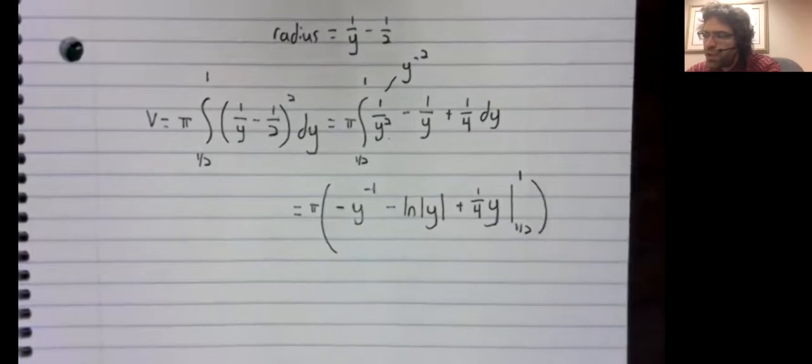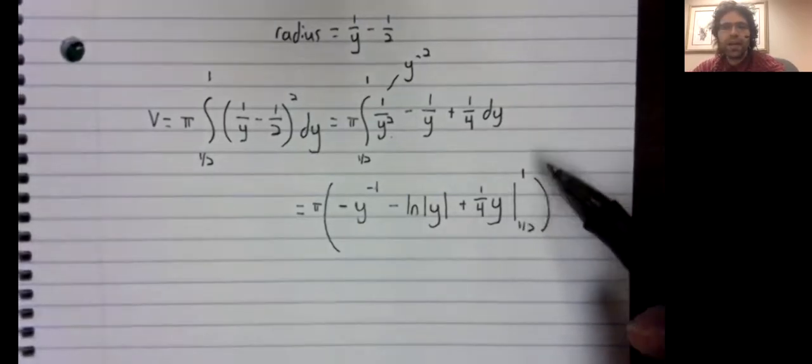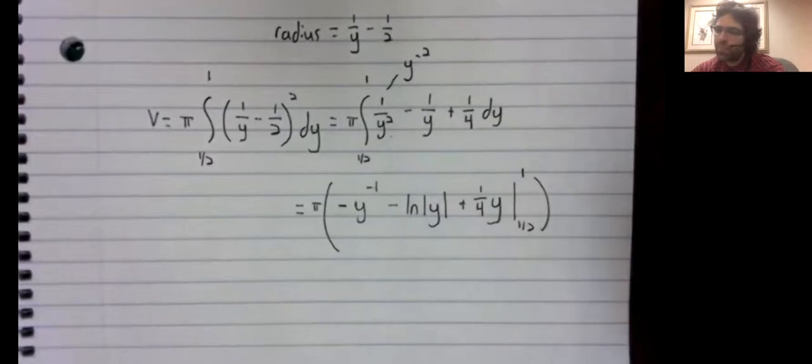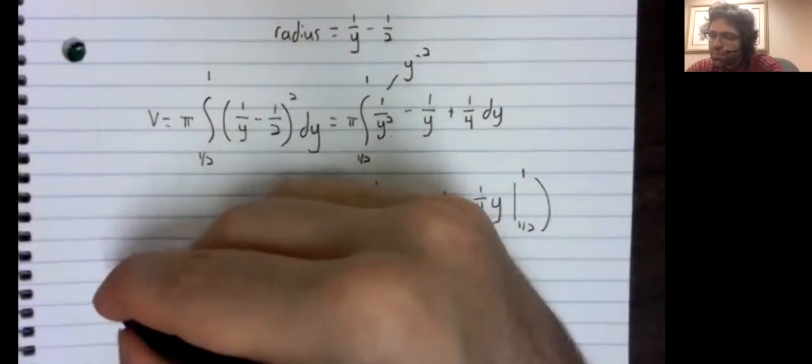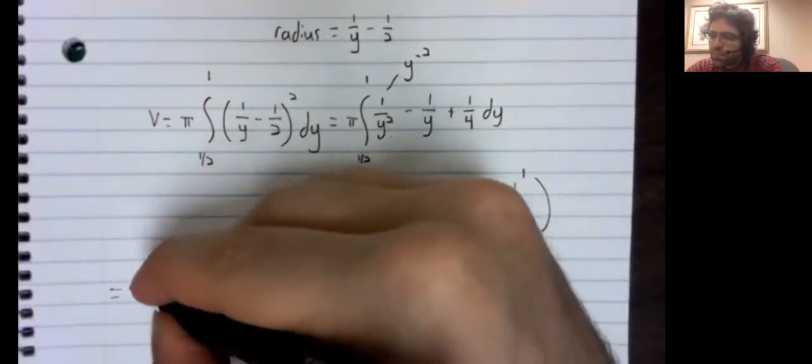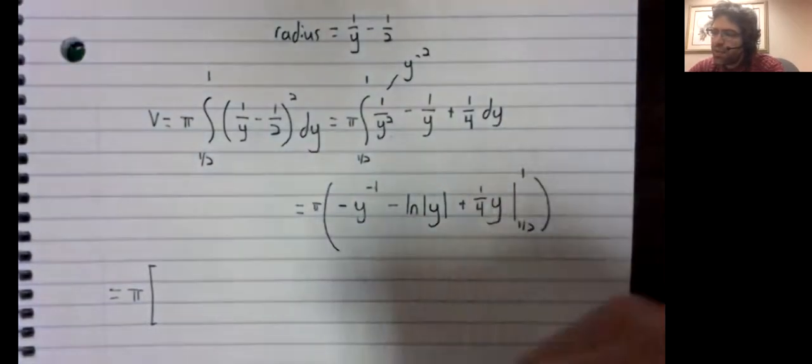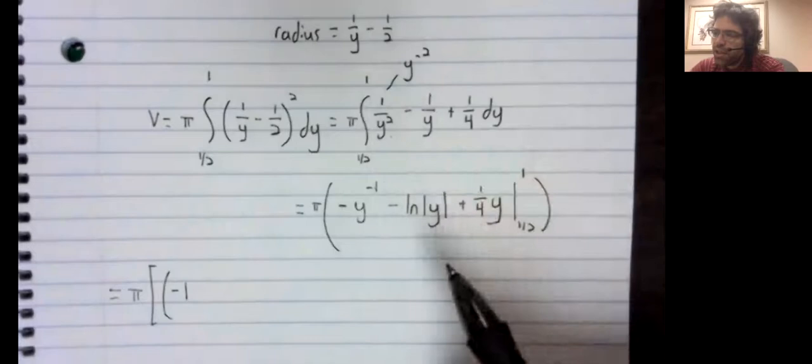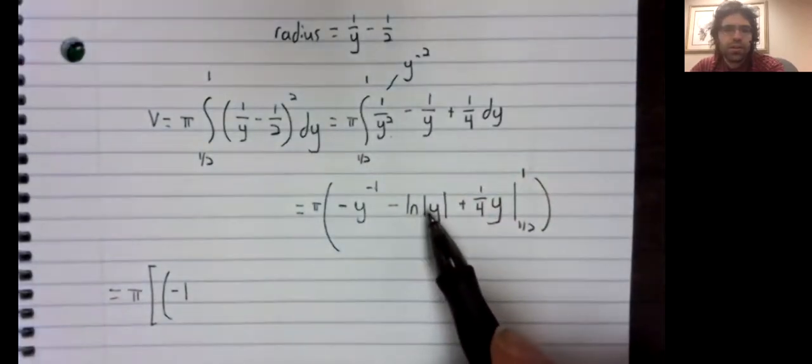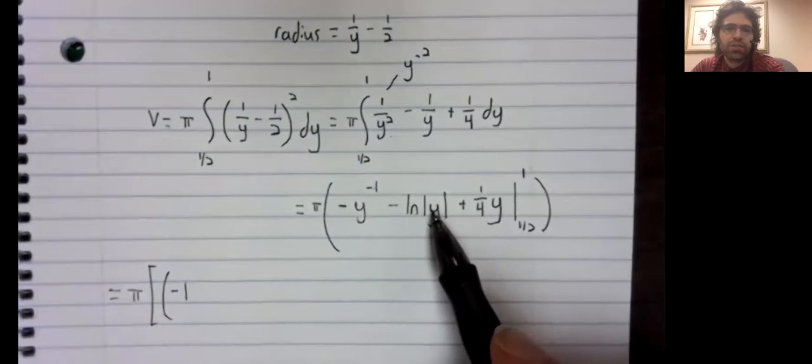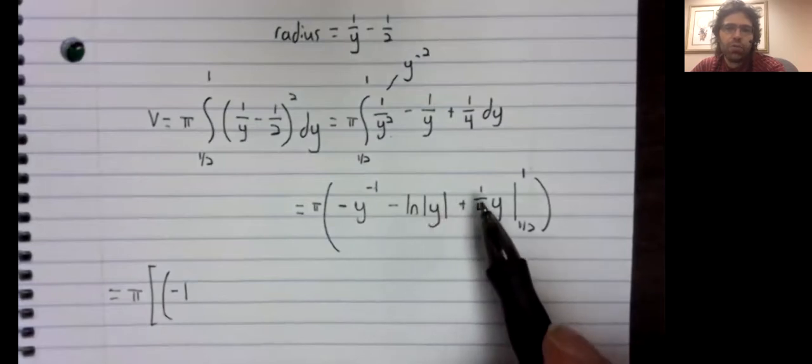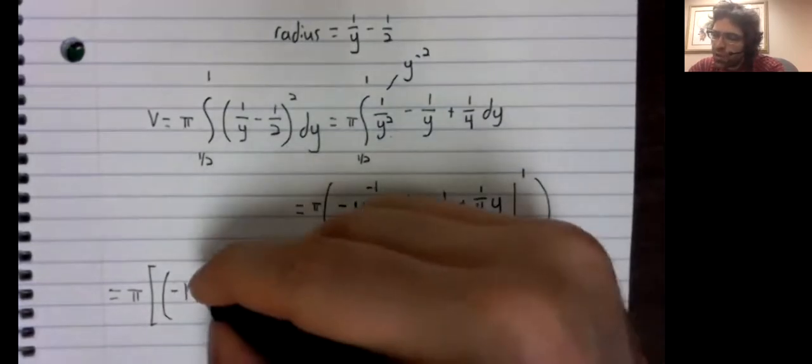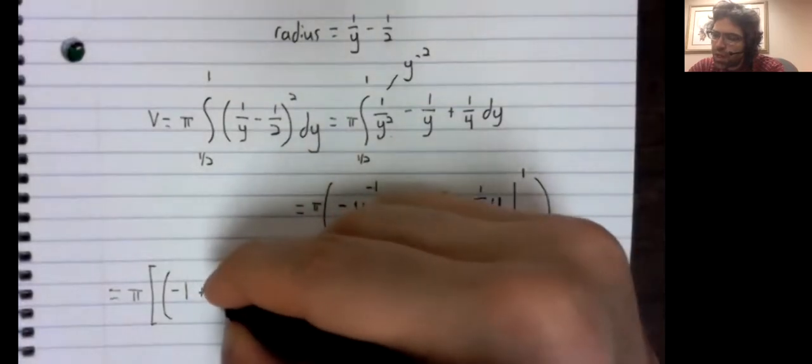Evaluated from one half to one. 1 over y. Stick one in here. Negative one. The natural logarithm of one happens to be zero. Plus one fourth times one.